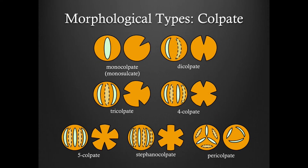Now let's take a look at the various morphological types for colpate grains. As with the porate morphological types, the number of colpi present is implied by the name. For example, dicolpate grains have two colpi present. Once again, the prefix stefano applies to apertures being situated around the equator, while the prefix peri applies to apertures that are randomly distributed over the surface of the grain.